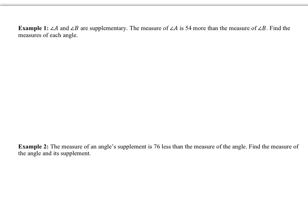You can use the measure of angle A or you can use a variable. If you're going to use a variable, you need to state what that variable represents. So I'm going to say let x equal the measure of angle A — you have to say the measure of angle A, not just angle A. The measure of angle B is equal to x plus 54, because it's 54 more than the measure of angle A.